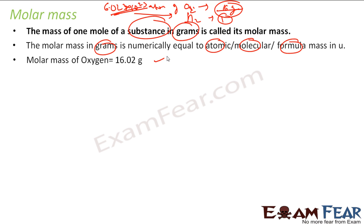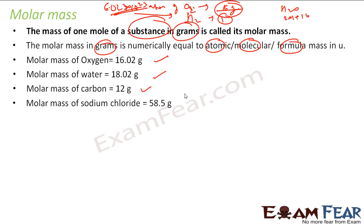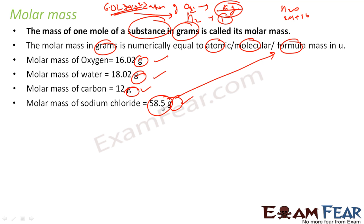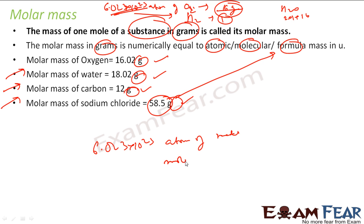The molar mass is in grams and equals the atomic mass or molecular mass of the compound or element. For elements, you use atomic mass; for compounds like water, molecular mass; for ionic compounds like sodium chloride, formula mass. For example: molar mass of oxygen is 16 g/mol; molar mass of water H₂O is 18 g/mol (2×1 + 16); molar mass of carbon is 12 g/mol; molar mass of sodium chloride is 58.5 g/mol. Molar mass is the mass of 6.023 × 10²³ atoms or molecules of that substance.